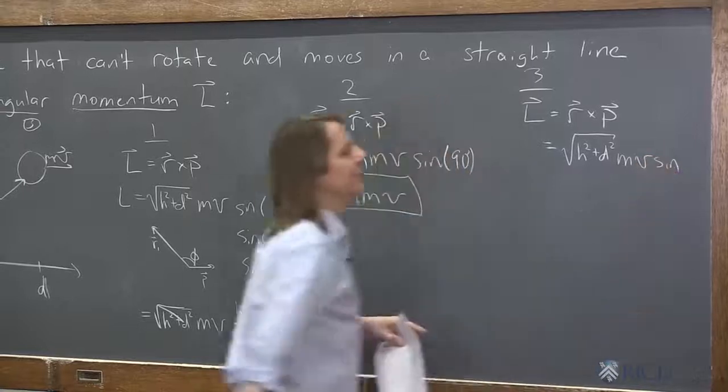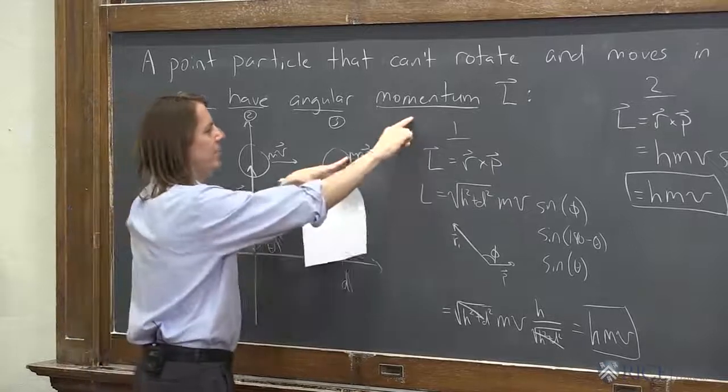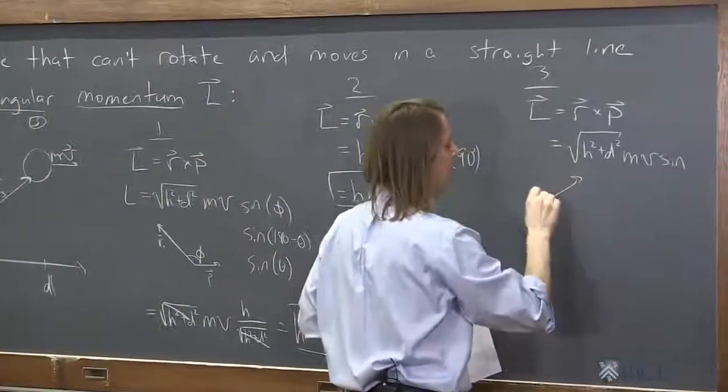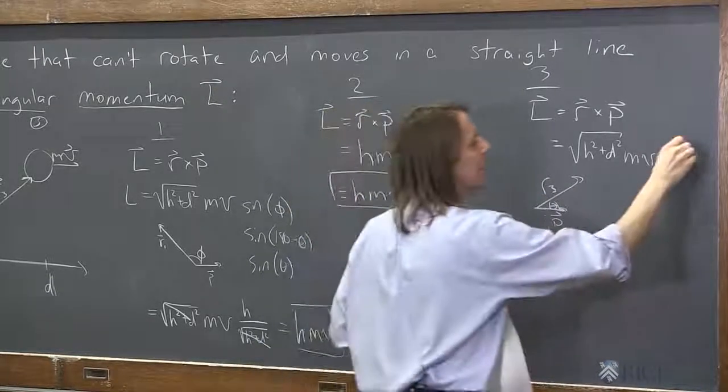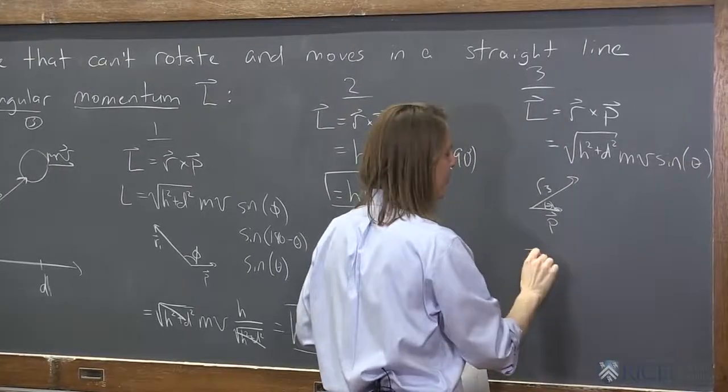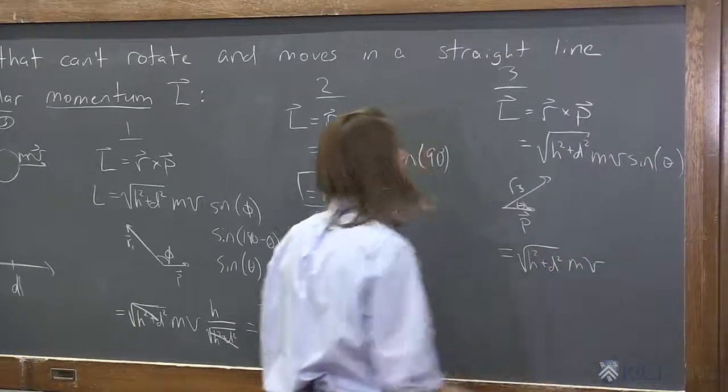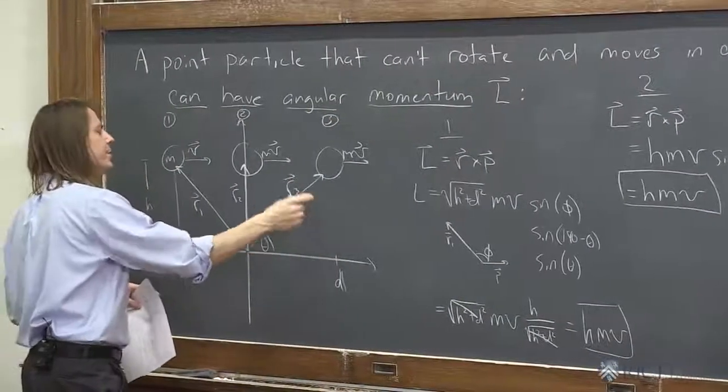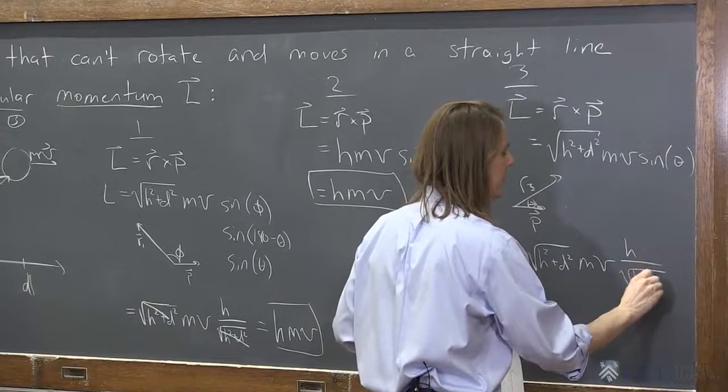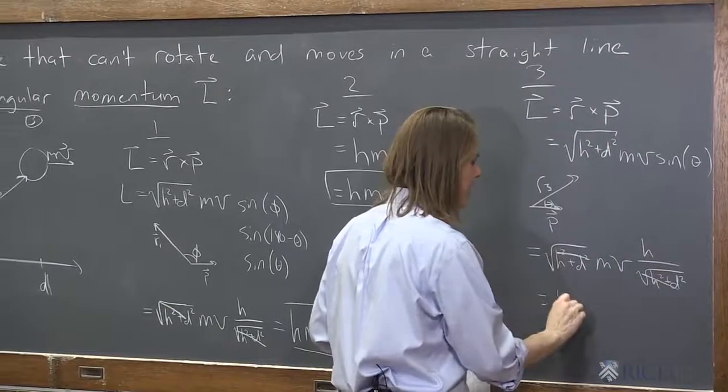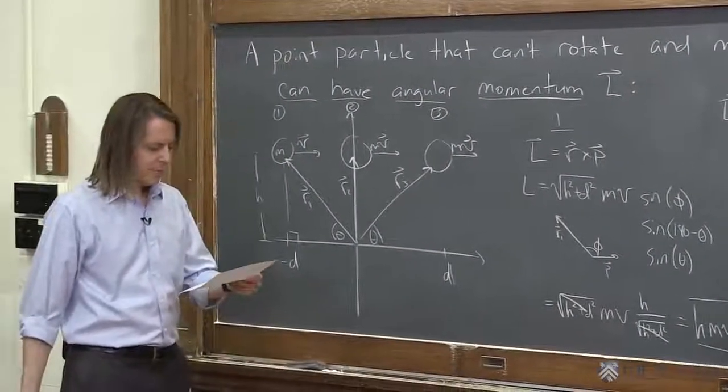And the sine of, in this case, it really is this theta. Because we bring this vector up here, draw them tail to tail. I'll go ahead and draw them. Right? There's r3. There's p. It is theta. So we'll put sine of theta. And now a similar thing is going to happen. Square root of h squared plus d squared. mv. What's the sine of that angle? h over the hypotenuse. Opposite over hypotenuse. Of h over, what's the hypotenuse? Square root of h squared plus d squared. hmv.